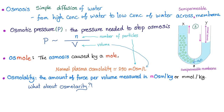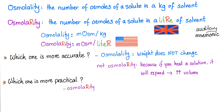Osmolality is the amount of force per volume measured in milliosmols per kilogram — per kilogram. What about osmolarity? It's going to be per liter. It's as simple as that. Osmolality: number of osmols of a solute in a kilogram of solvent. Osmolarity: the number of osmols of a solute in a liter of solvent.